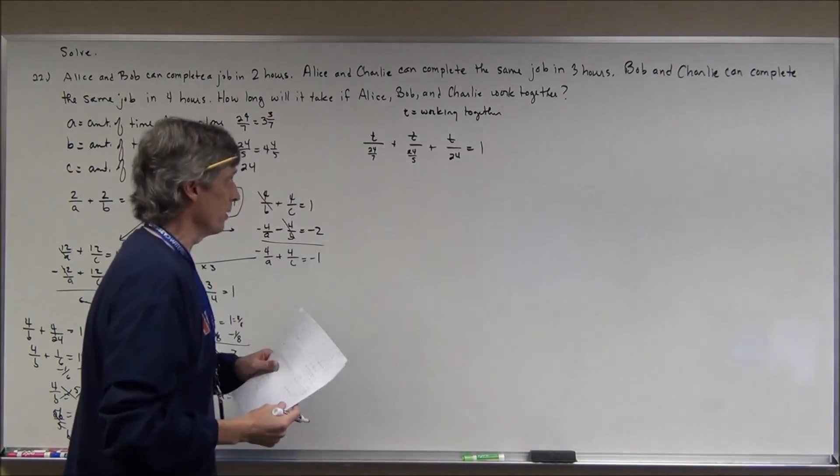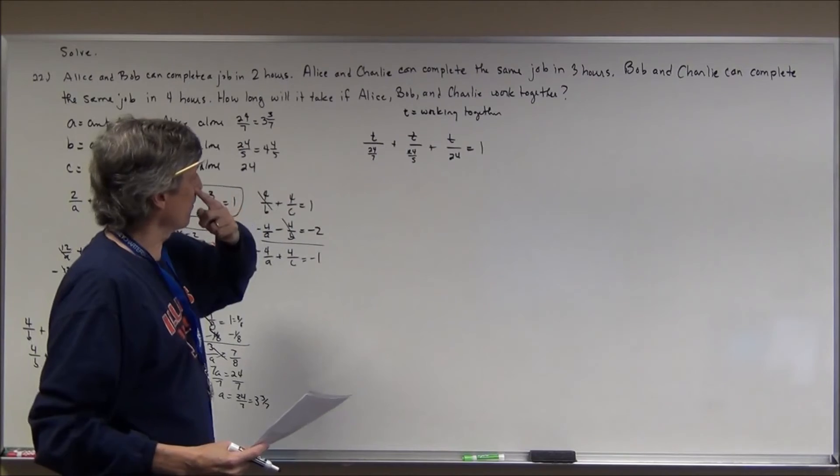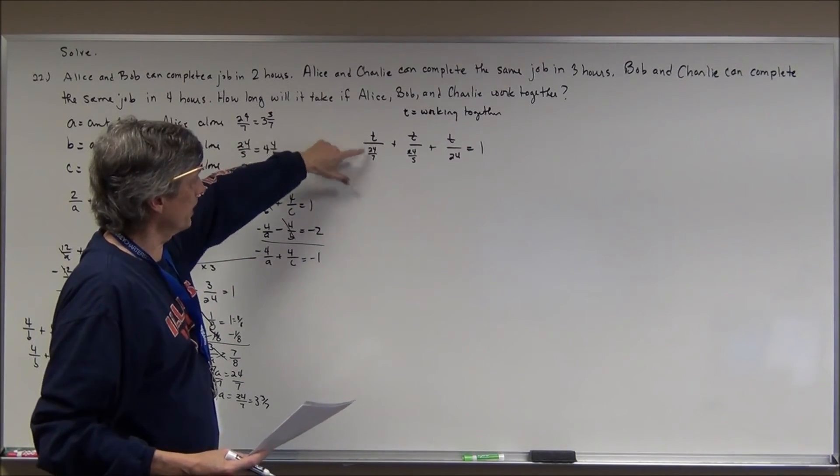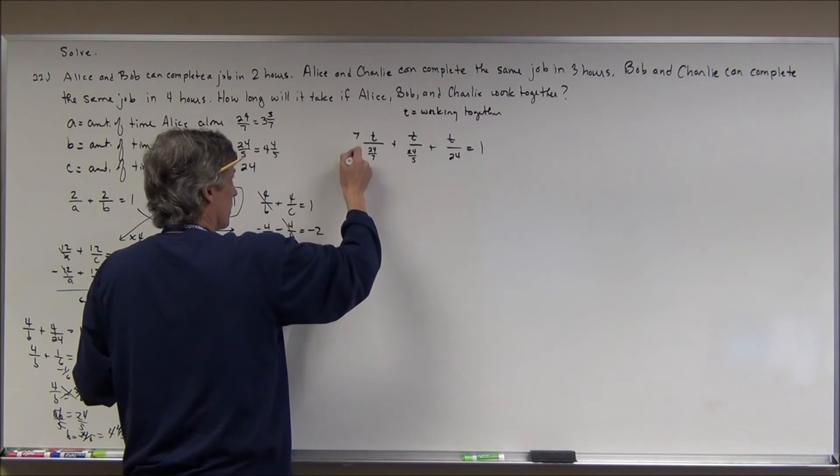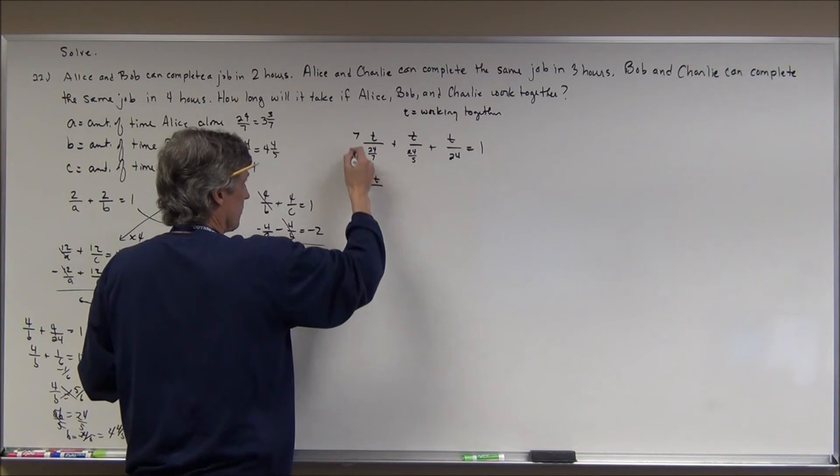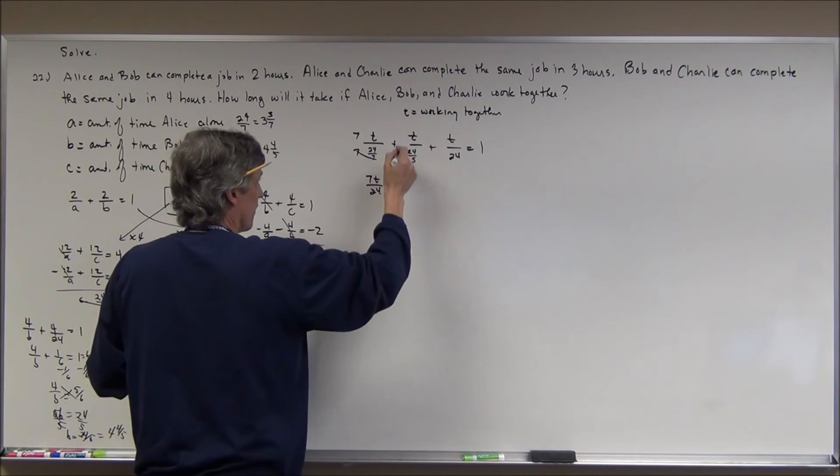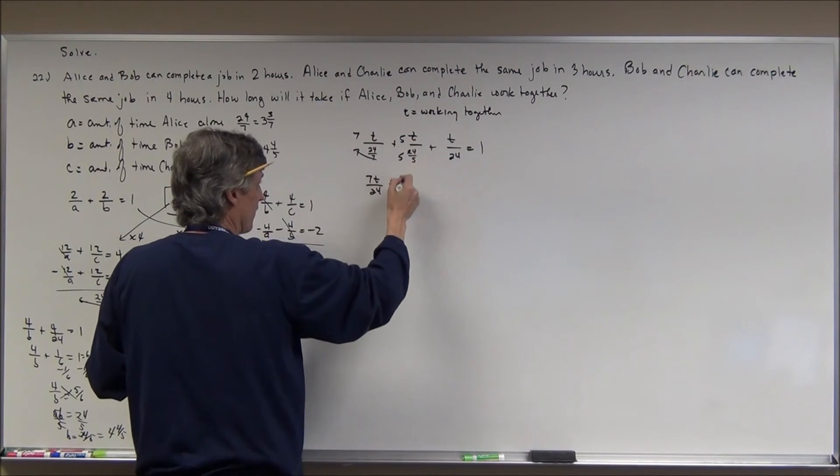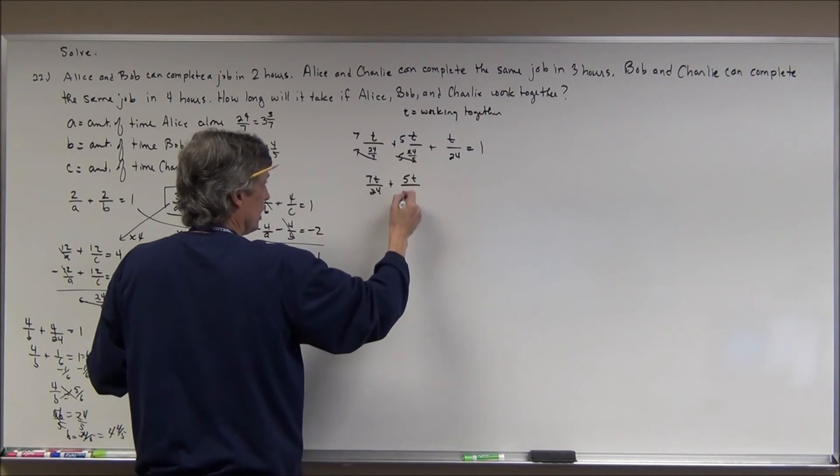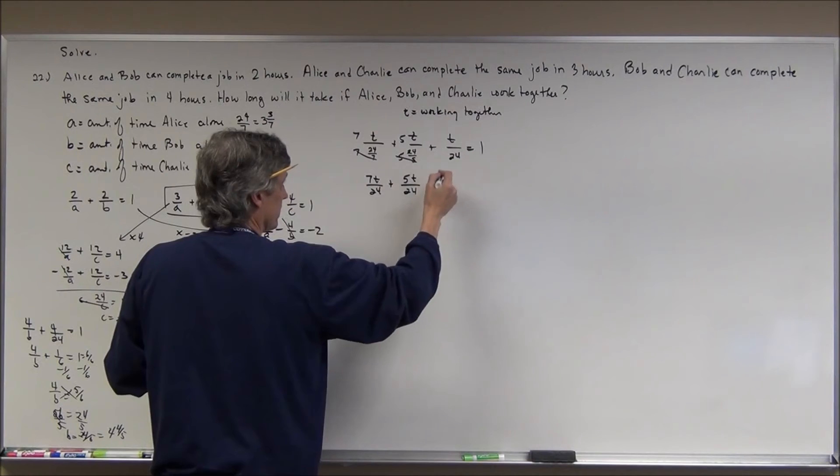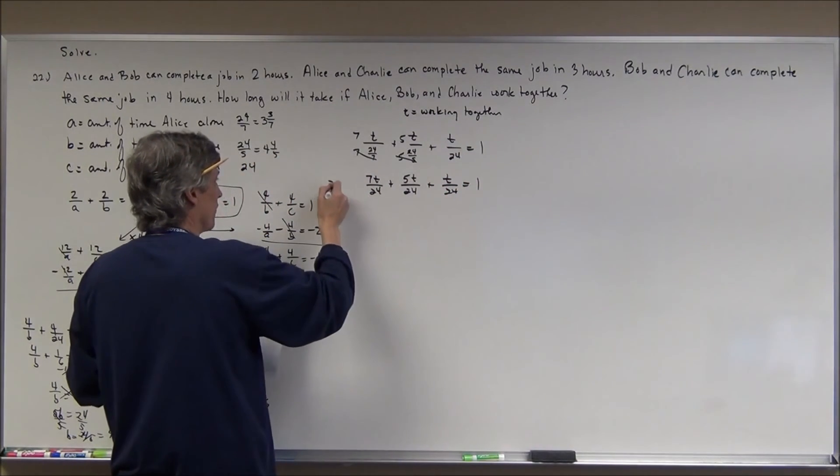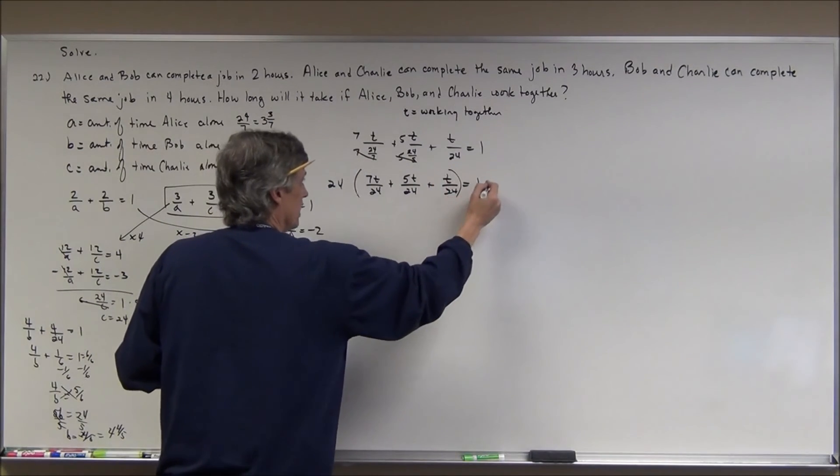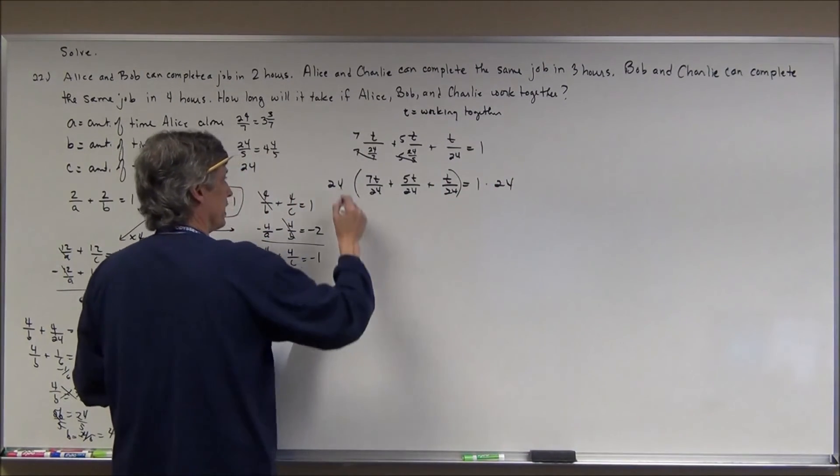Now, before you panic, these aren't complex fractions, but you can multiply top and bottom by 7, top and bottom by 5. If I multiply top and bottom here by 7, I get 7T over 24. If I multiply top and bottom by 5, I get 5T over 24. And I just leave this one the same. Now, my common denominator is 24. 24 times this side, 24 times the other side.